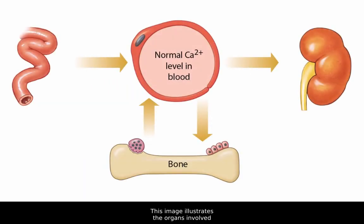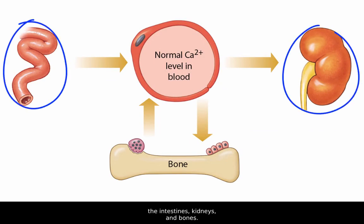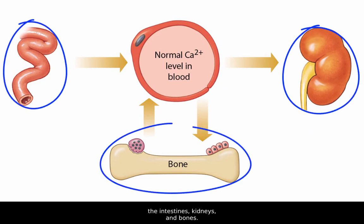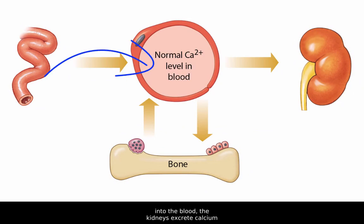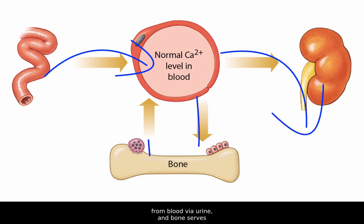This image illustrates the organs involved in calcium ion homeostasis in blood: the intestines, kidneys, and bones. The intestines serve as the site for calcium absorption from diet into the blood. The kidneys excrete calcium from blood via urine, and bone serves as a reservoir for storing calcium.